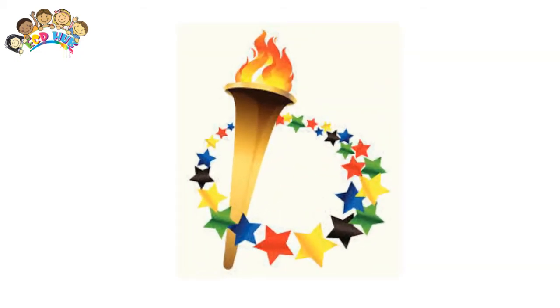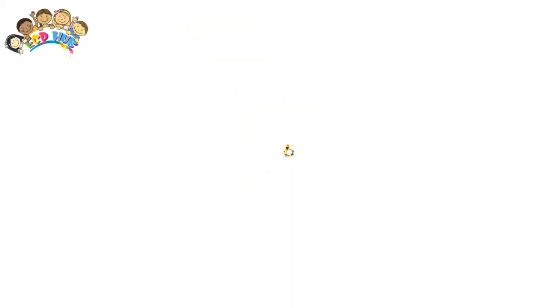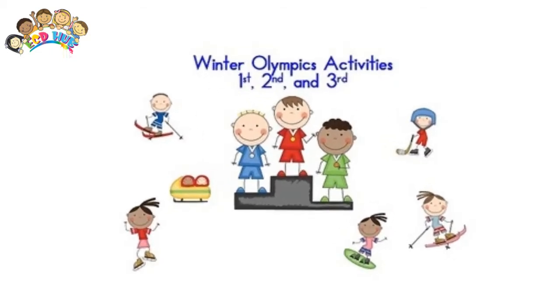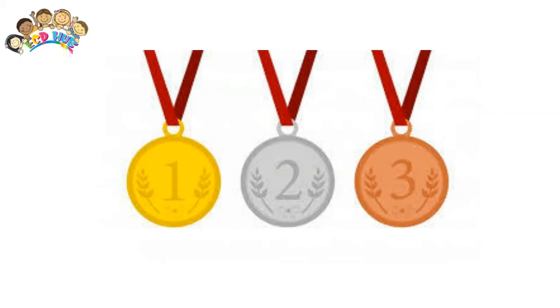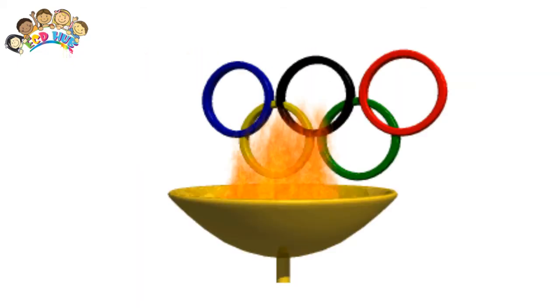The first, second, and third place finishers in each event receive, respectively, gold, silver, and bronze medals. The Olympic torch is a symbol of the ancient Greek Olympic Games.